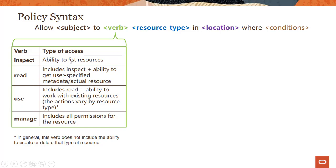Inspect basically means you can list your resources. Read and inspect in most cases are very similar — read gives you some extra capabilities like getting metadata for actual resources. When you write a verb called use, you have the ability to read plus the ability to work with existing resources, like updating a resource. Manage includes all the permissions for the resource. If you're not sure which verb to use, you can go with manage, or use, or restrict access with inspect or read depending on your use case.